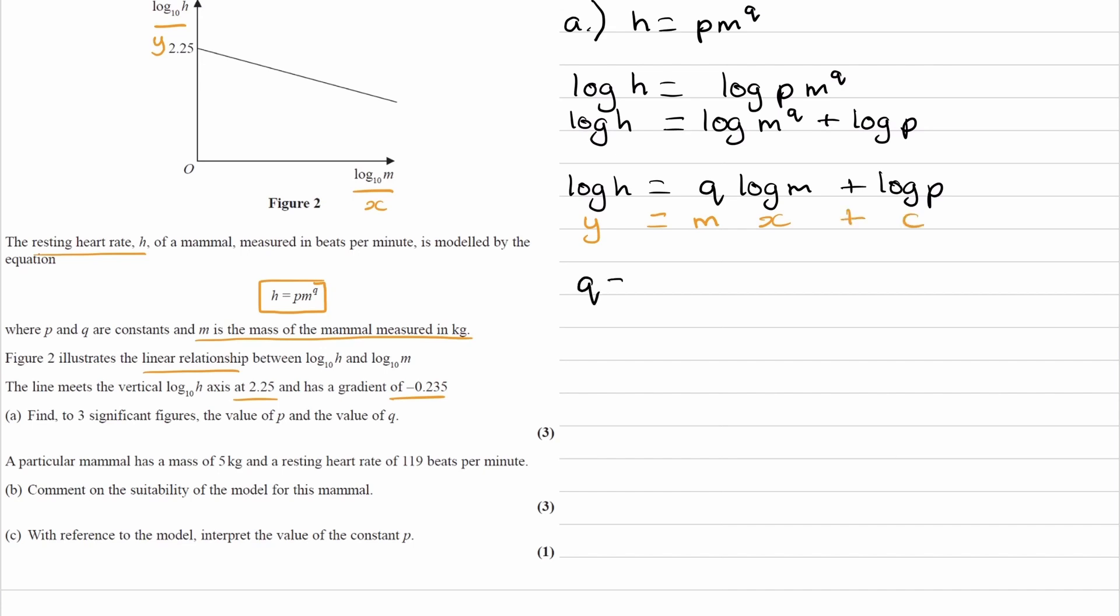So then we can say that q is equal to the gradient, which is minus 0.235. And then we can say that the y-intercept, which is log p, is equal to 2.25. And then we just need to figure out what p and q are. Well, we already have q.